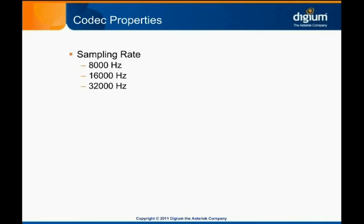A codec may also specify how many milliseconds of audio it puts into each packet to transmit. Most codecs used for IP telephony use 20 or 30 millisecond packets, though some codecs are configurable.